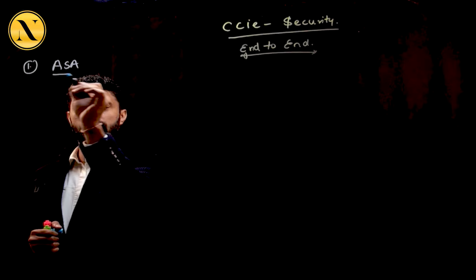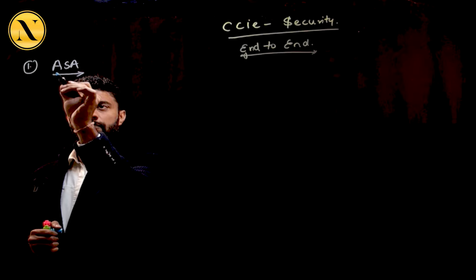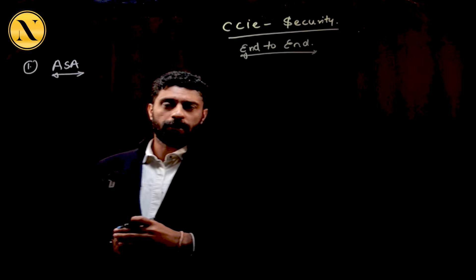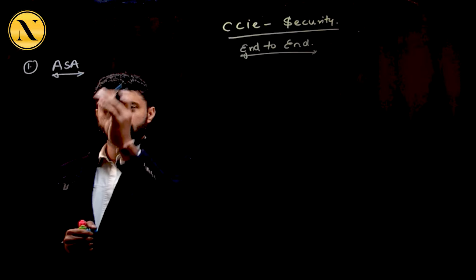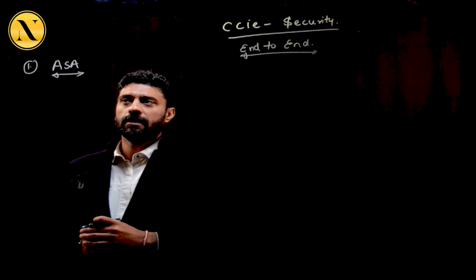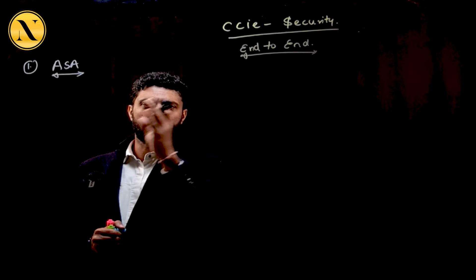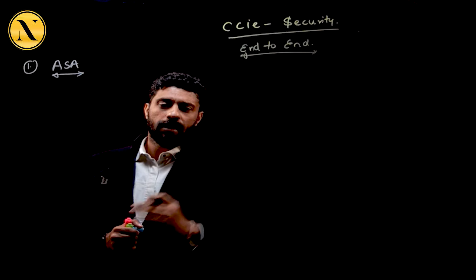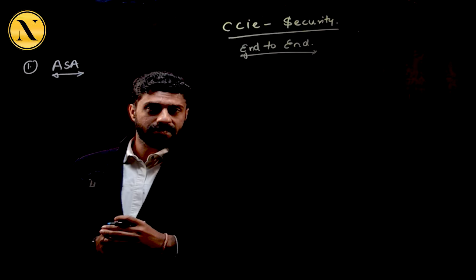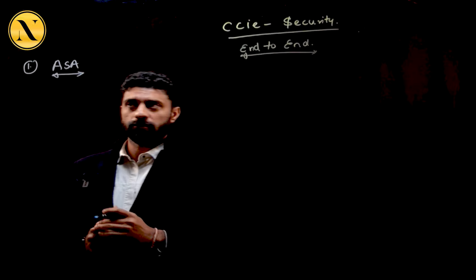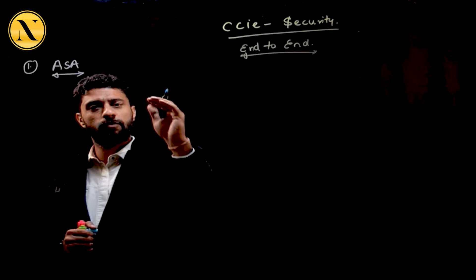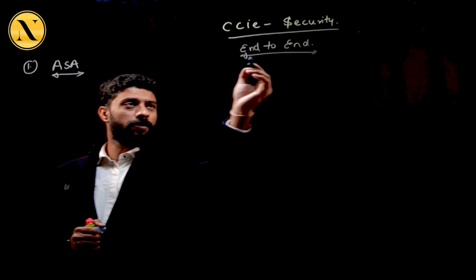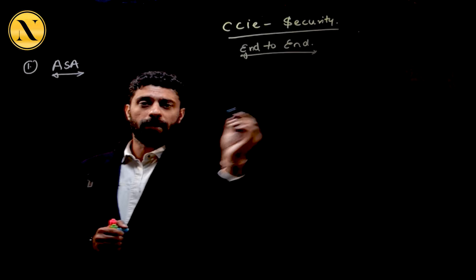It's still a very valuable product. In CCIE Security, multiple subjects will be covered here, like active-standby, active-active, context, cluster, NATing, access lists, and so forth. We'll start with what ASA Firewall is at that foundational level — and that is the meaning of the word end-to-end.